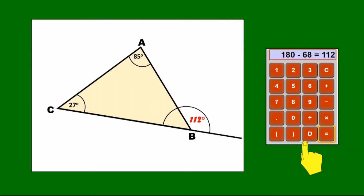But can you spot the fact that 112 is what you get when you add together 85 and 27? So can you see why? That's a quick way of working out that particular exterior angle.